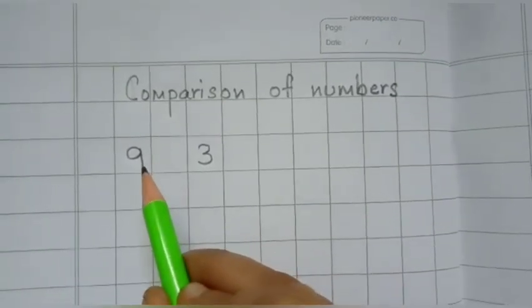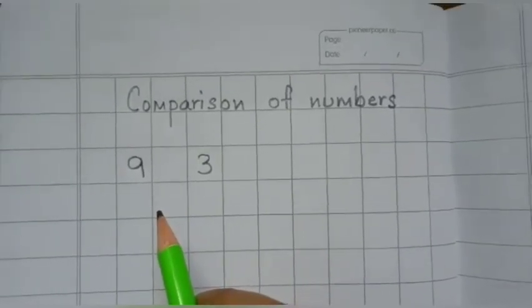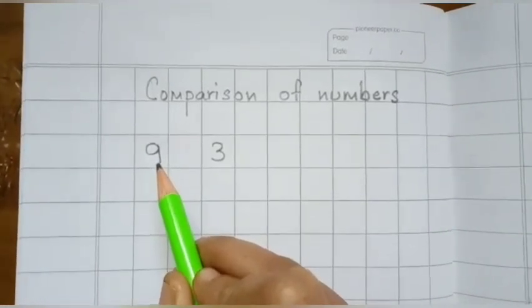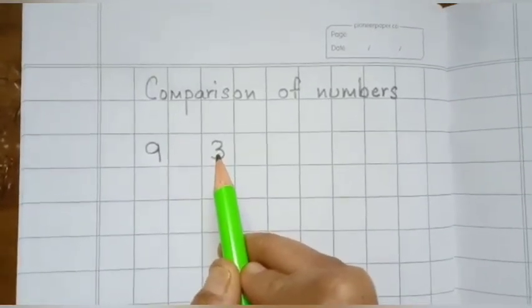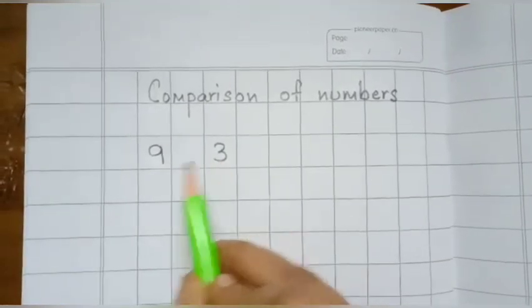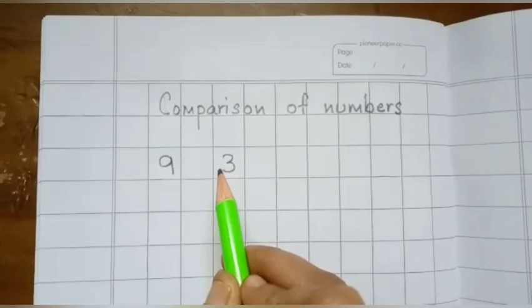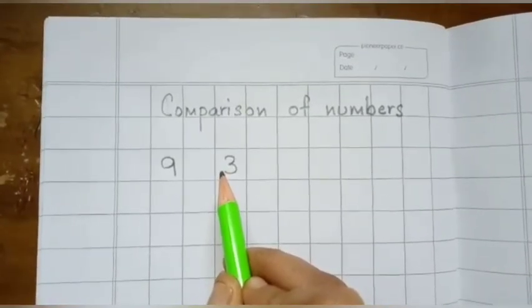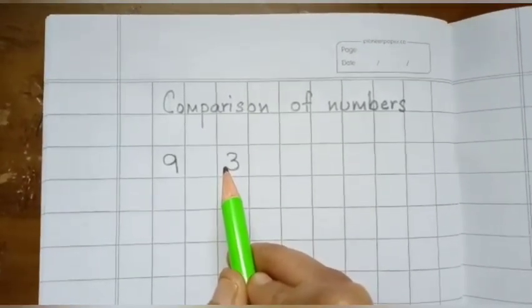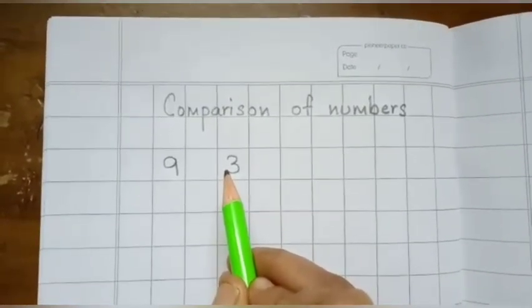Now, with 9 and 3 — can you tell me which number is the big number? Yes, 9. 9 is the big number and 3 is the small number. Now, when we have these two numbers and we are asked to put the sign, how shall we do that? Here comes the story of the crocodile that I told you a little before.